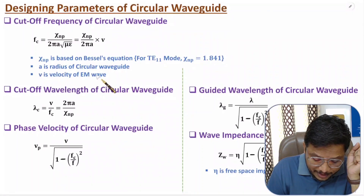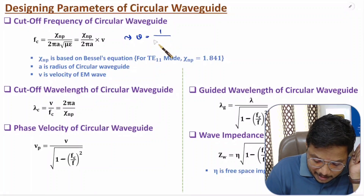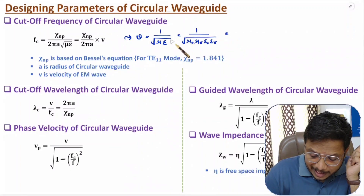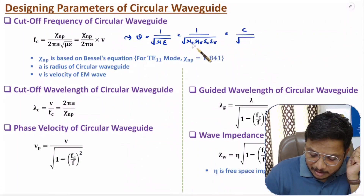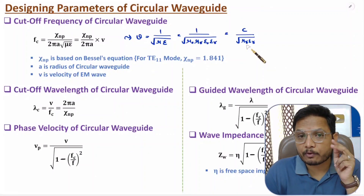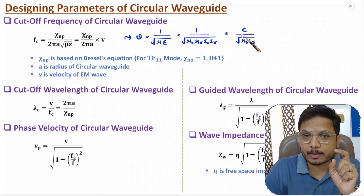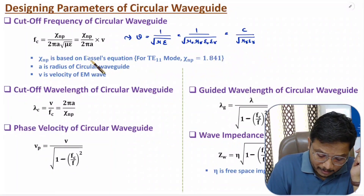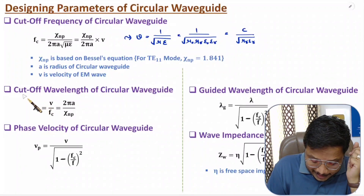Small 'a' is the radius of the circular waveguide, and v is the velocity of the EM wave: v = 1/√(με), where μ = μ₀μᵣ and ε = ε₀εᵣ. The velocity of light in free space c = 1/√(μ₀ε₀). For free space or air, μᵣ = εᵣ = 1, so the EM wave velocity equals the speed of light. For other materials, μᵣ and εᵣ will change.